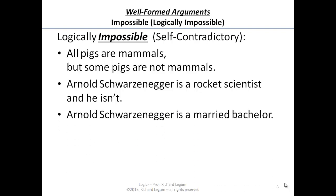Here's another one: Arnold Schwarzenegger is a married bachelor. That's a contradiction. A bachelor is someone who is not married. You can't have a married bachelor — it's contradictory. That's what we're talking about.